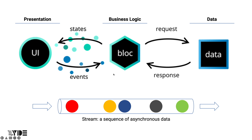In other words, there should be a channel that sends events from UI to Bloc, and a channel that sends the state — which is the result of event processing — from Bloc to UI.